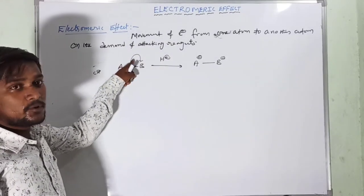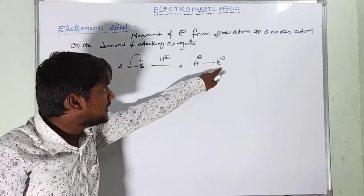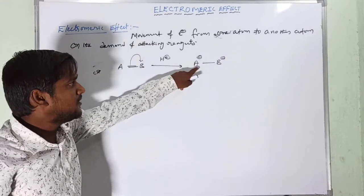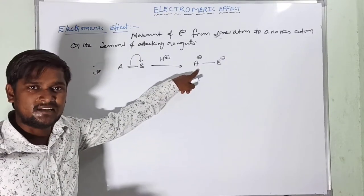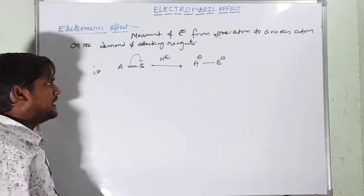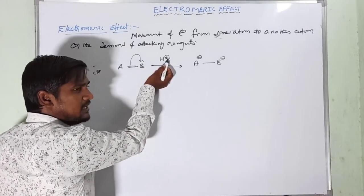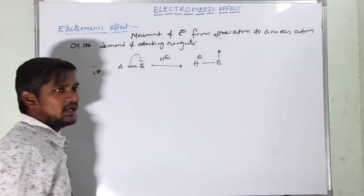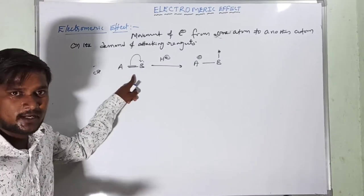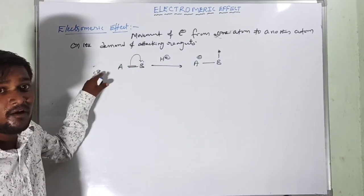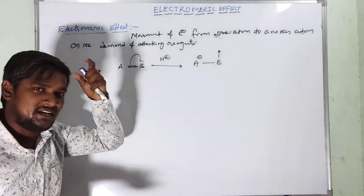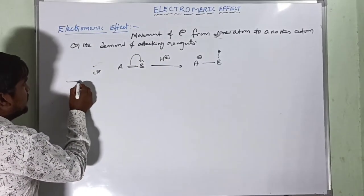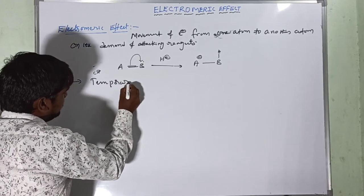When B (let's assume carbon) gains the pair of electrons it becomes a carbanion. When A loses the electrons it creates a positive center — a carbocation. The negative center attracts H⁺ — a proton. This cannot polarize by itself, but with the help of additional reagents it is polarized, that's why it is called a temporary effect.